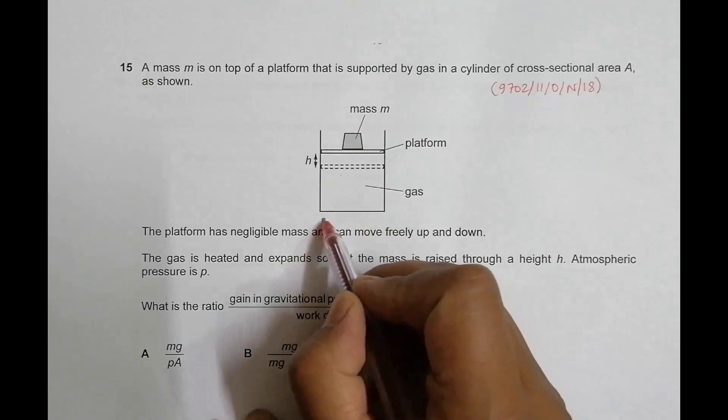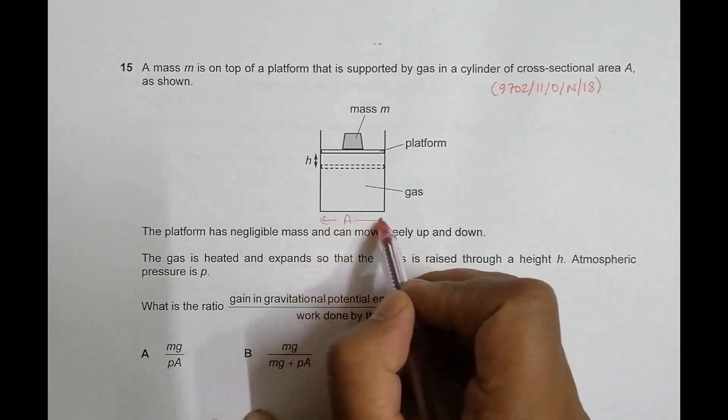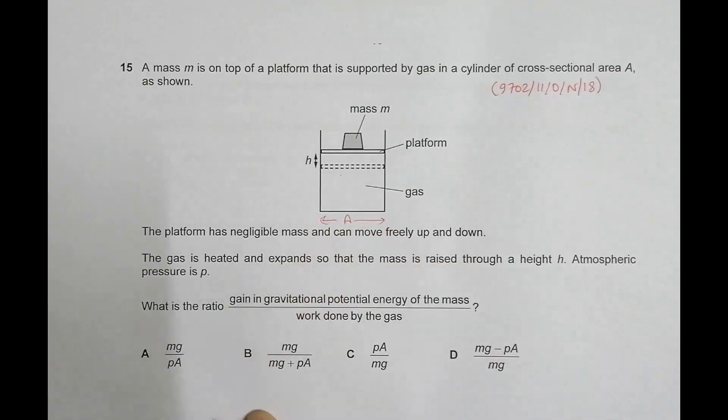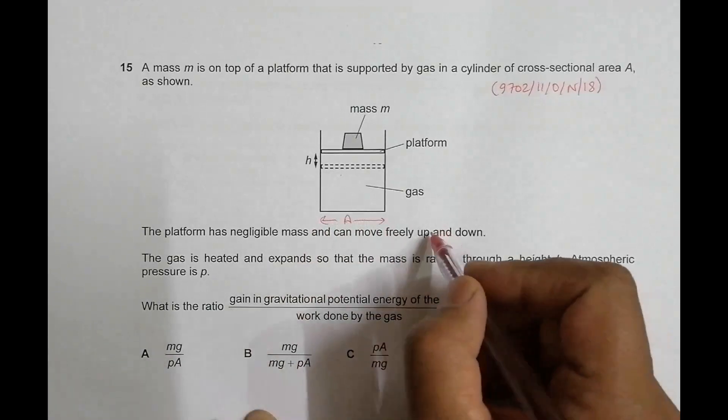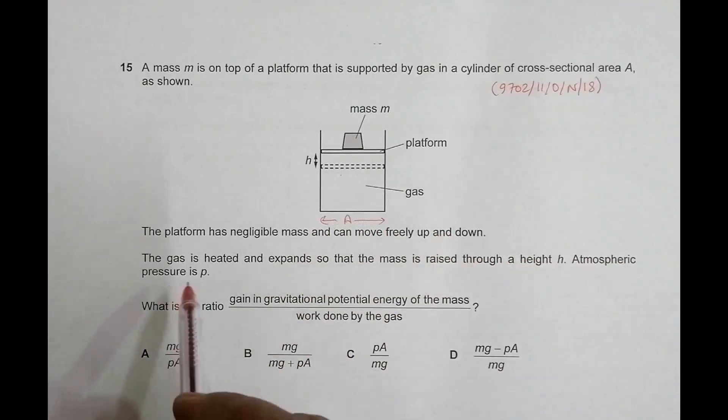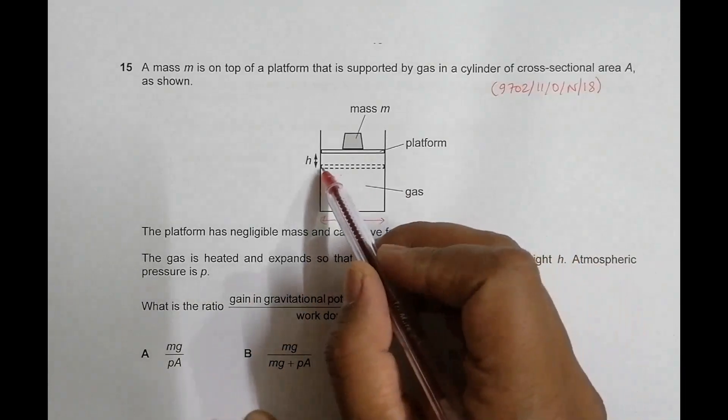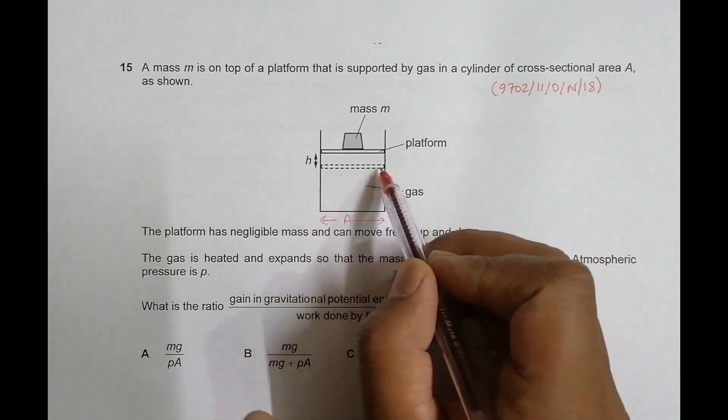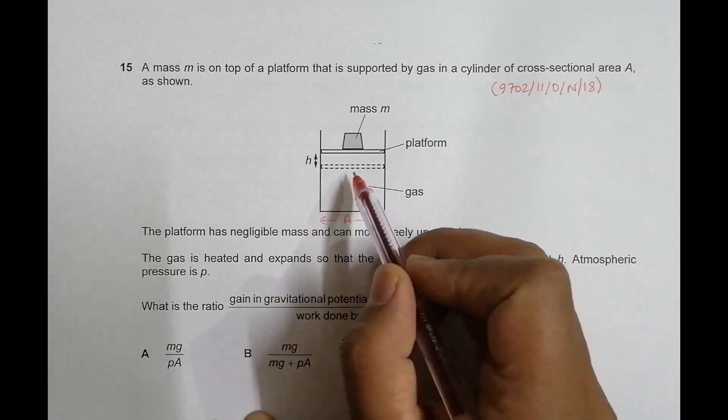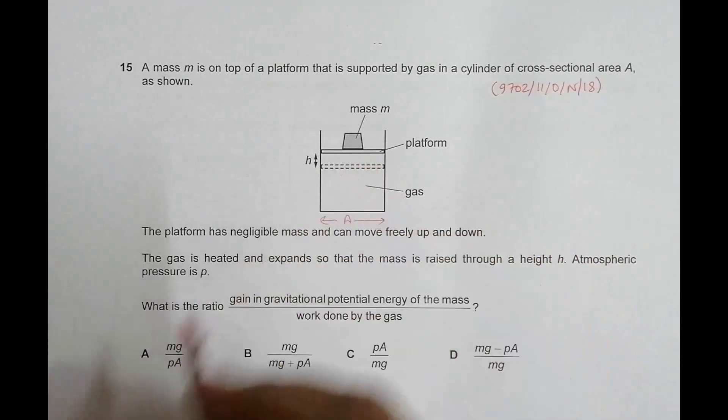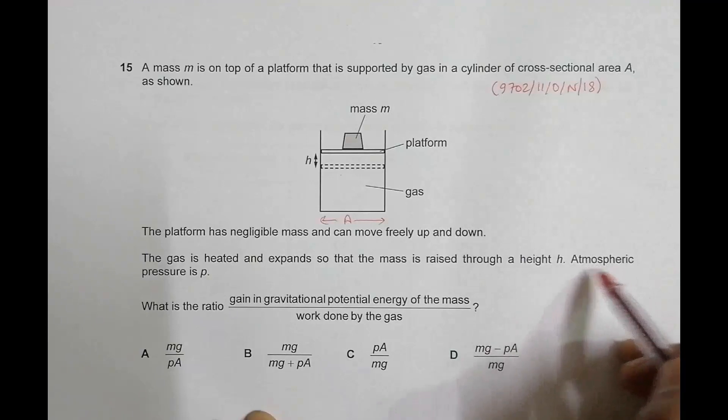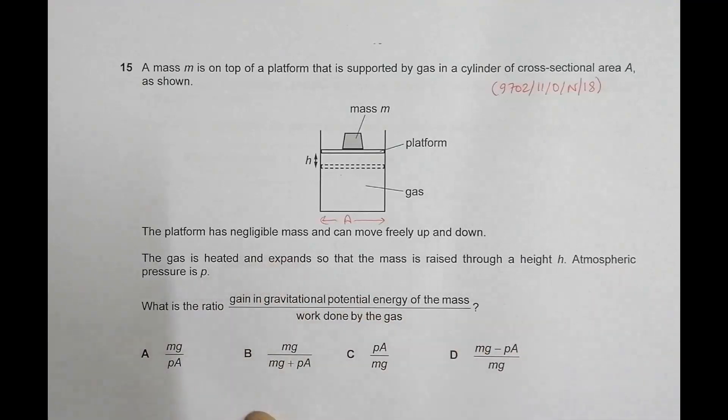The platform has negligible mass and can move freely up and down, so no friction. The gas is heated and expands so that the mass is raised through a height h. The initial position of the platform was like this, now the gas is heated and the platform is raised to this position. The atmospheric pressure is P. We have to find the ratio of gain in gravitational potential energy of the mass divided by work done by the gas.